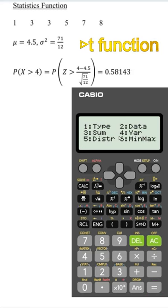Press AC, shift 1, select 4 for the variation. If we need the mean value, choose 2, press equal.